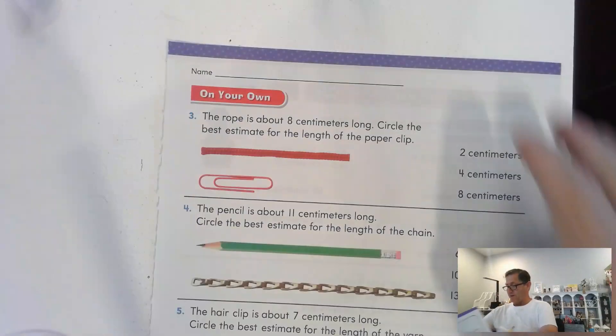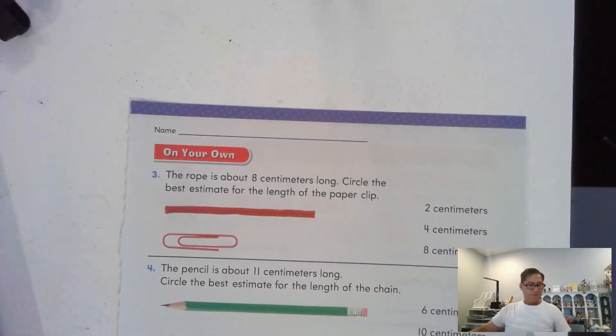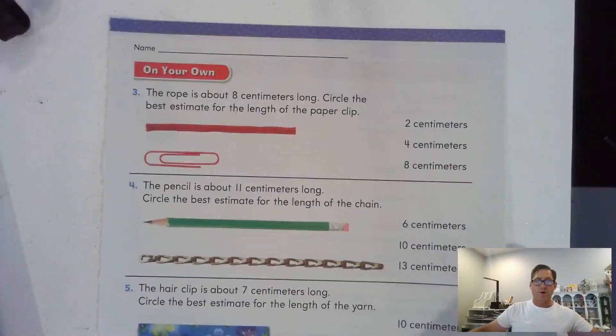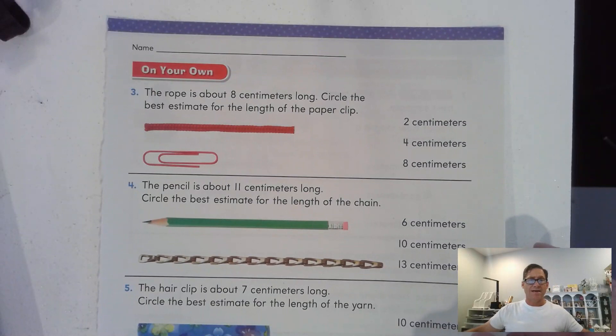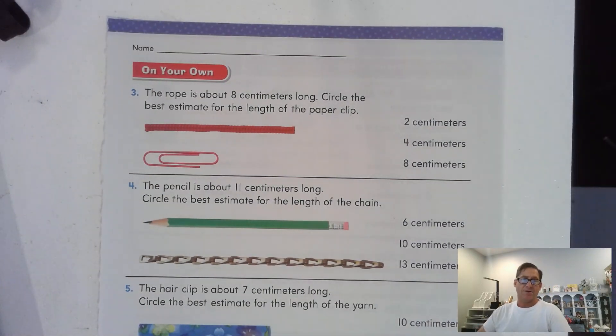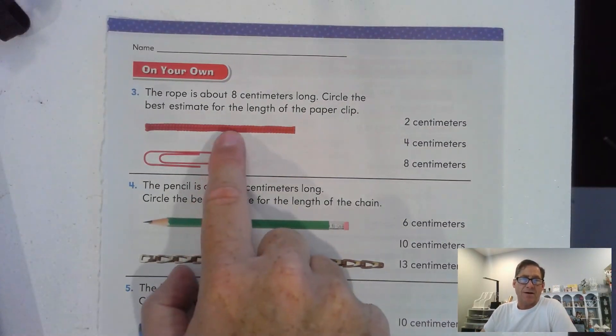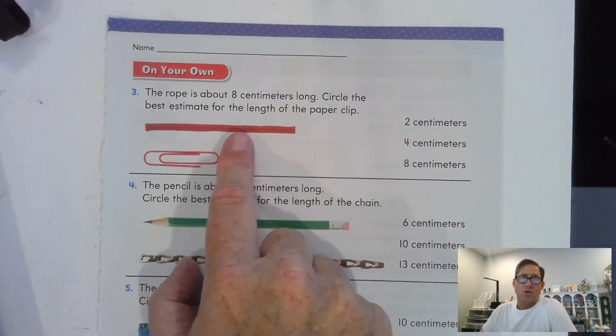Alright. Let's go to page 451. So, this rope is about 8 centimeters long. Circle the best estimate for the length of the paperclip. To me, it looks like the paperclip is about half as long as this rope.